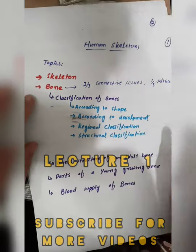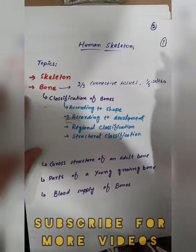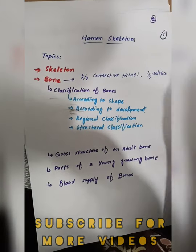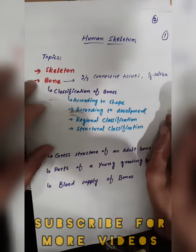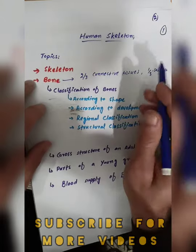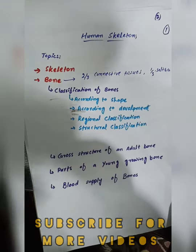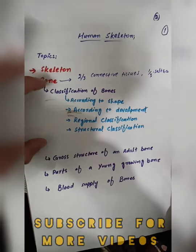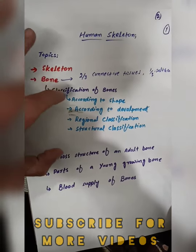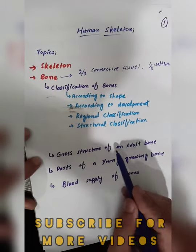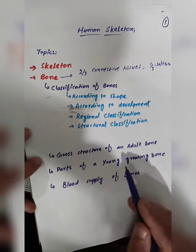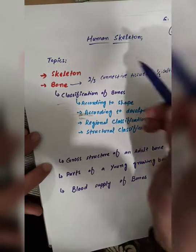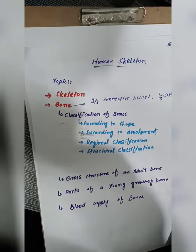In the name of Allah. The most important topic is the human skeleton. We will discuss the topic of human skeleton, which includes bones and cartilage. In this topic, we will discuss new subtopics like skeleton, bone, classification of bones, growth structure, parts of young growing bones, and blood supply of bones.